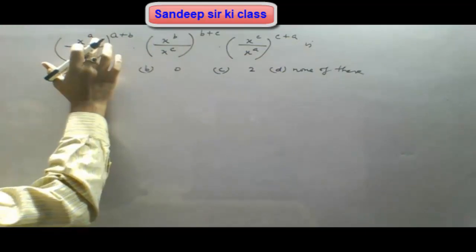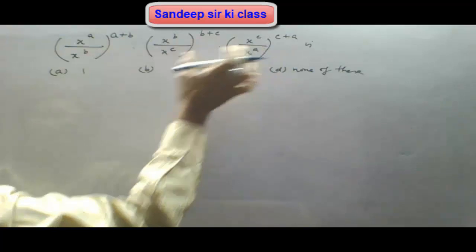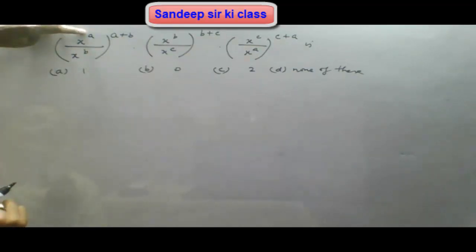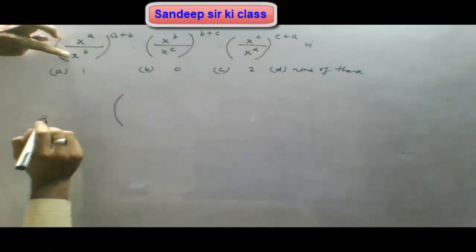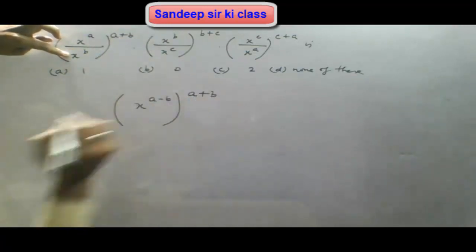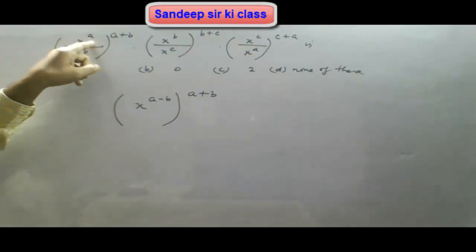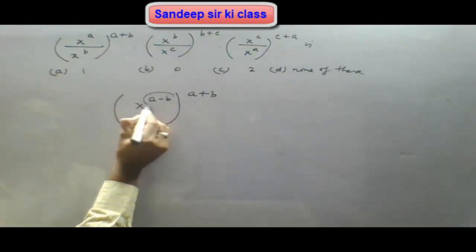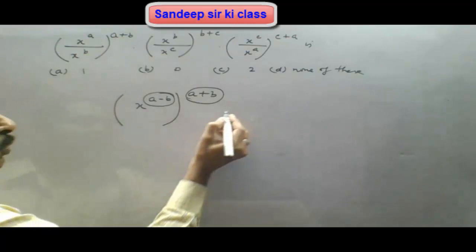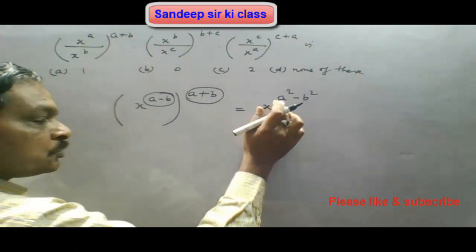The next question is: (x^a / x^b) raised to the power (a+b), into the second term and third term in cyclic order — find the value. We see the first term: x^a upon x^b can be written as x^(a-b), and the whole is raised to the power (a+b). So this becomes x raised to the power (a-b)(a+b), which equals x^(a²-b²).